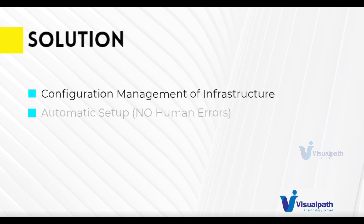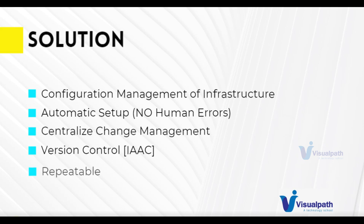With automatic setup, if you have new provisioning or any changes, we're going to do it automatically — so no or very little chance of human errors. Everything will be centralized, so any changes that happen will be centralized. And if you have that as code, you can version control it — so you have infrastructure as code. When you have code to manage your infrastructure, it's repeatable; we can execute it as many times as we want. Also it's reusable, so you can reuse this infrastructure as code across your projects.